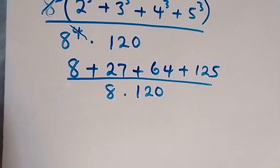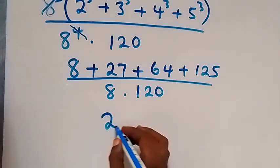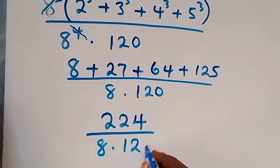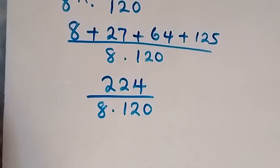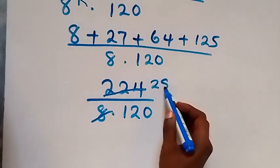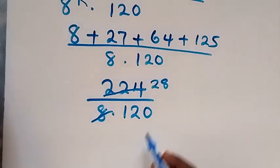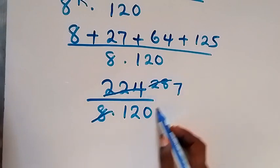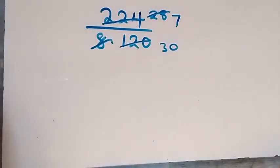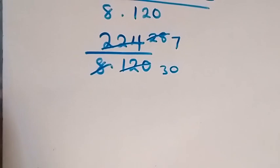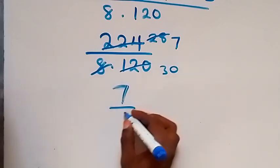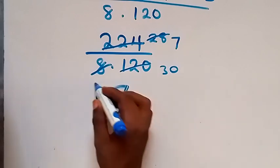Adding the numerator gives 224, divided by 8 times 120. Then 8 goes into 224 to give 28. Then 4 goes into 28 to give 7, and 4 goes into 120 to give 30. So the final answer is 7 over 30.